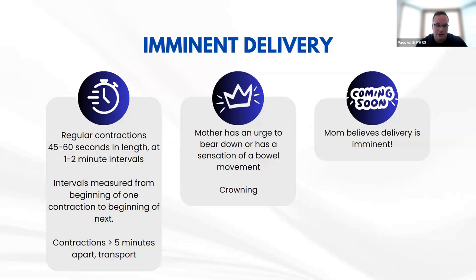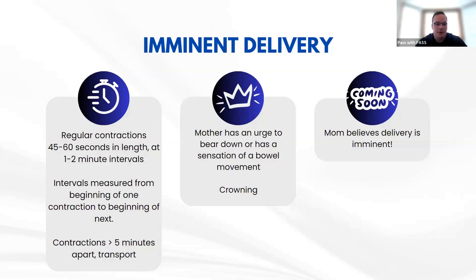Signs of imminent delivery include regular contractions lasting 45 to 60 seconds at 1 to 2 minute intervals — measured from the beginning of one contraction to the beginning of the next. Contractions greater than 5 minutes apart is the general guideline to transport, but that's a blanket number. Your comfort level and critical decision-making matter, especially with long transport times. If mom's having regular contractions lasting nearly a minute, one to two minutes apart, you're probably going to be delivering that baby.